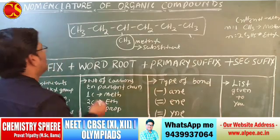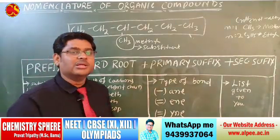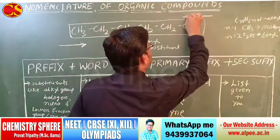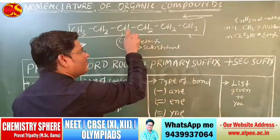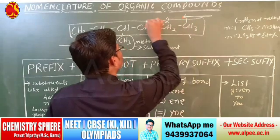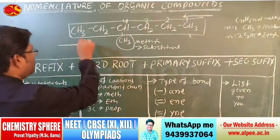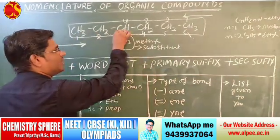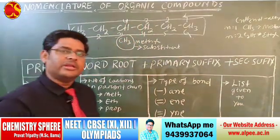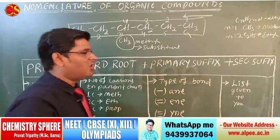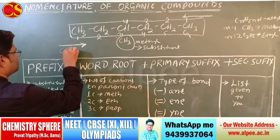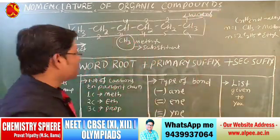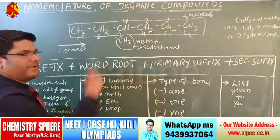Numbering will be done in such a way that the substituent finds the minimum number. One direction gives the substituent at position 4; the correct direction gives it at position 3. So 3 is the minimum number, and that is the correct direction of numbering. Three — methyl — is the prefix.